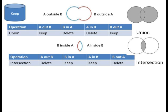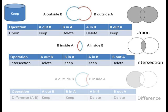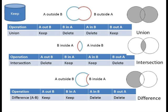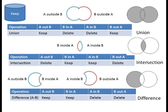For an intersection operation, we want to keep B inside A and A inside B. And finally, for the set difference operation, A minus B, we want to keep A outside B and B inside A. For B minus A, we would just reverse that and keep B outside A and A inside B.